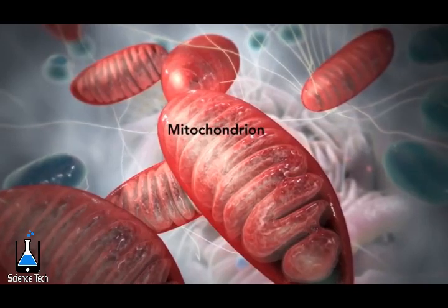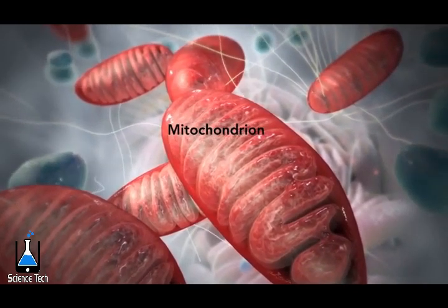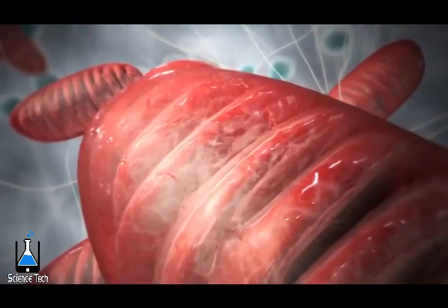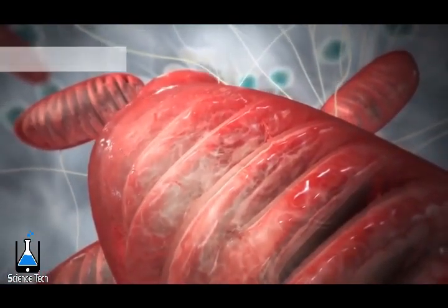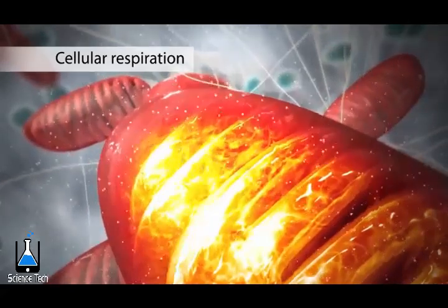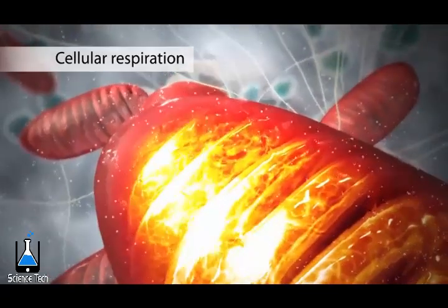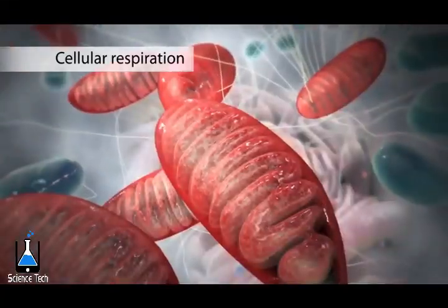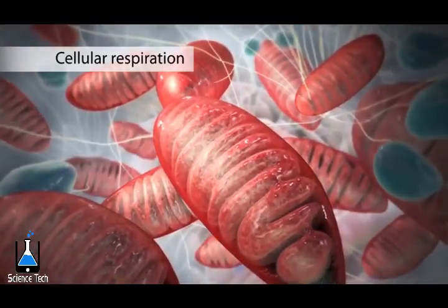The mitochondrion is an organelle that is the powerhouse for both animal and plant cells. During a process called cellular respiration, the mitochondria make ATP molecules that provide the energy for all of the cell's activities. Cells that need more energy have more mitochondria.